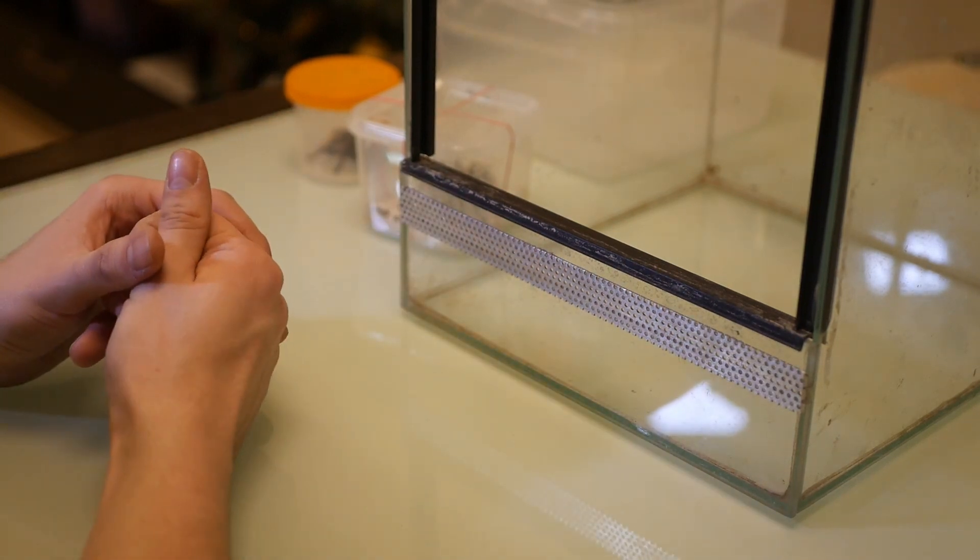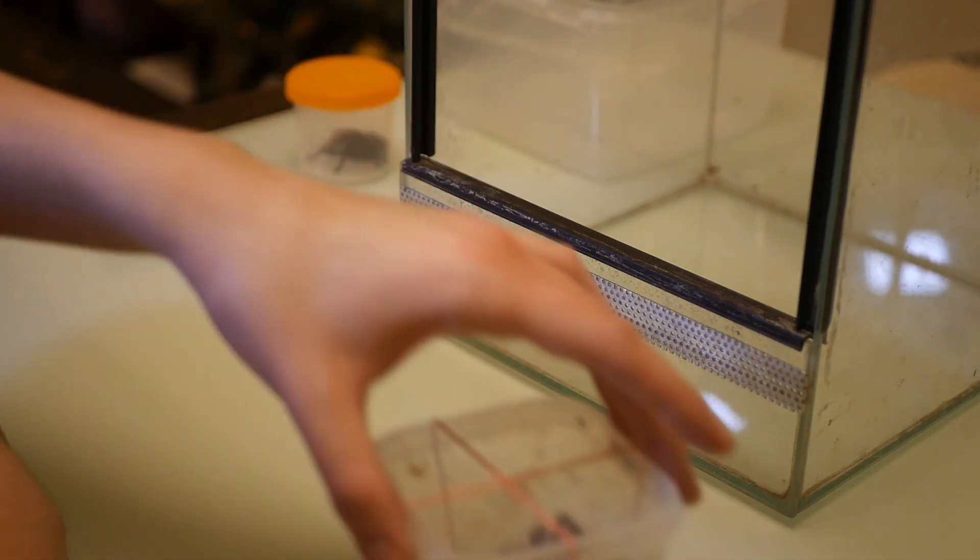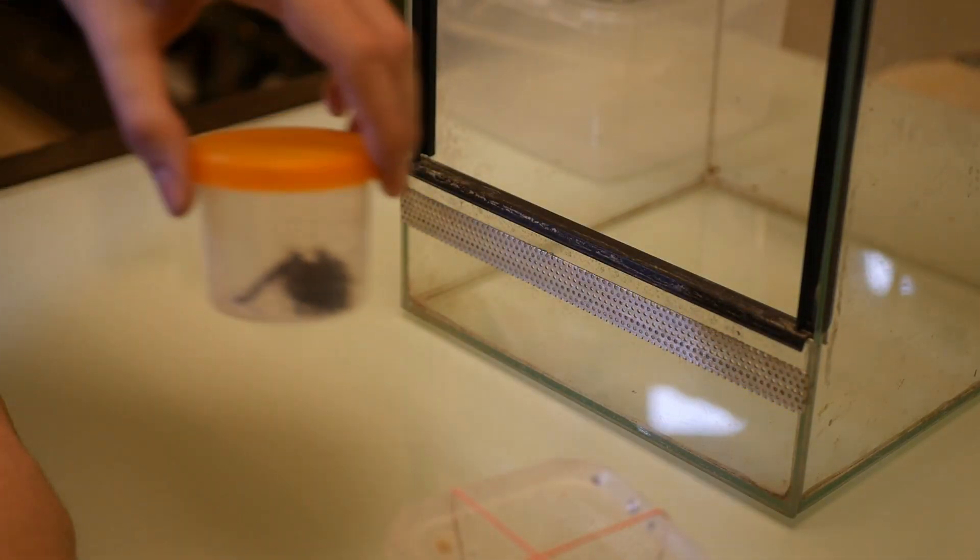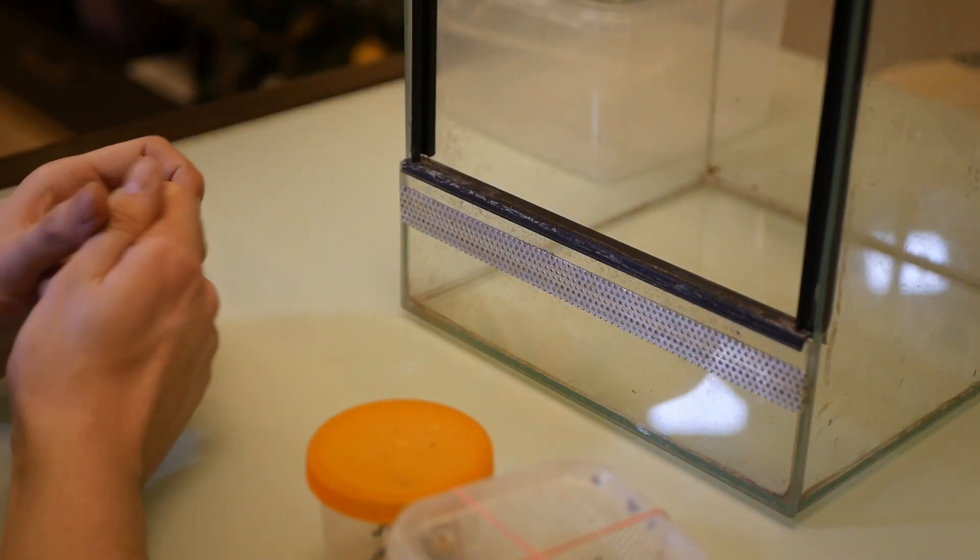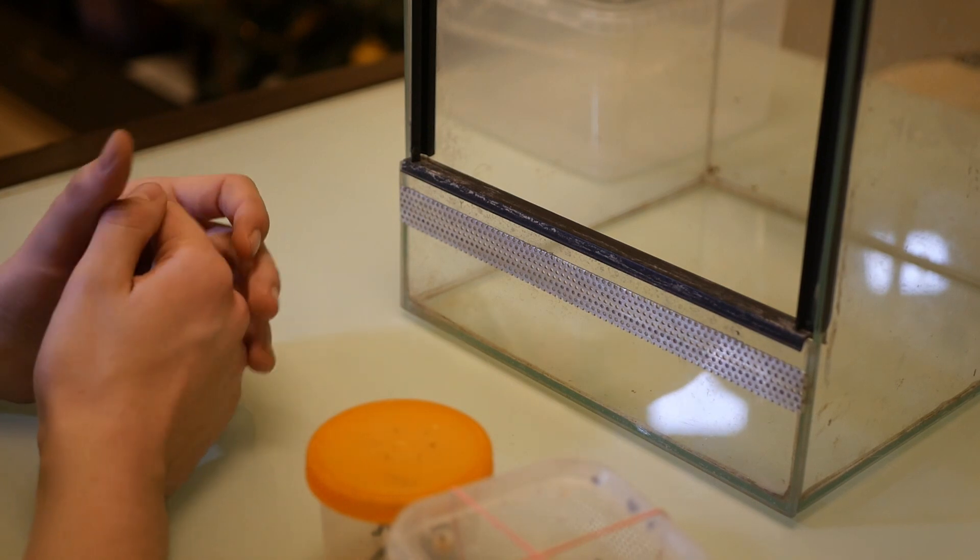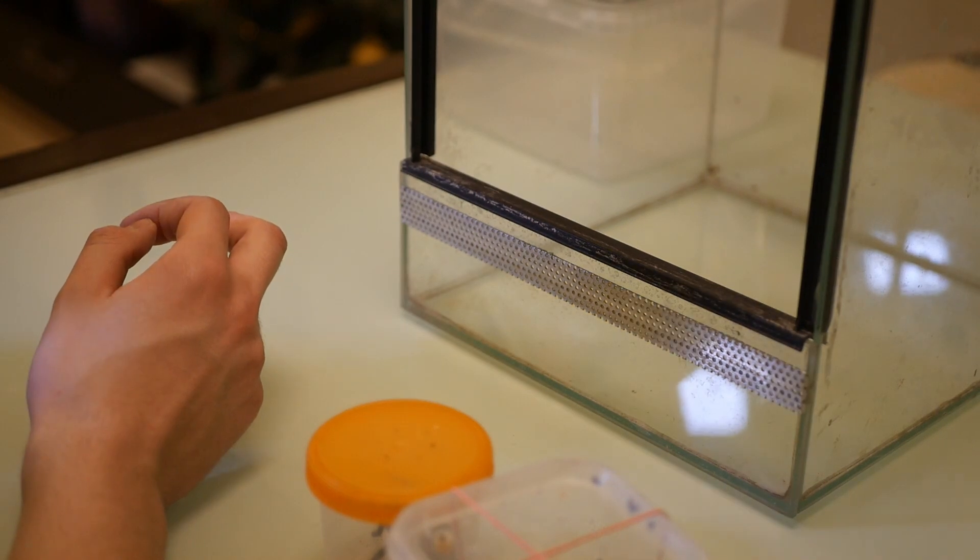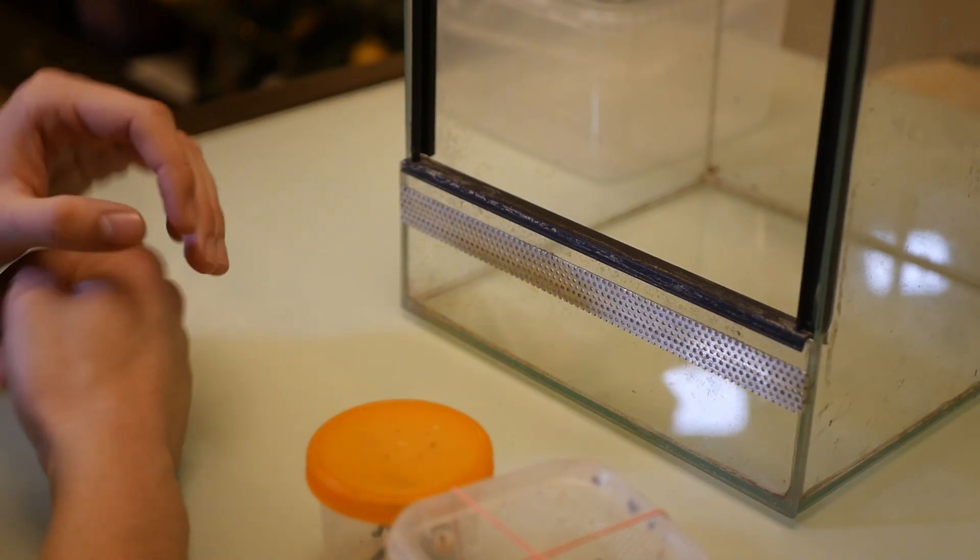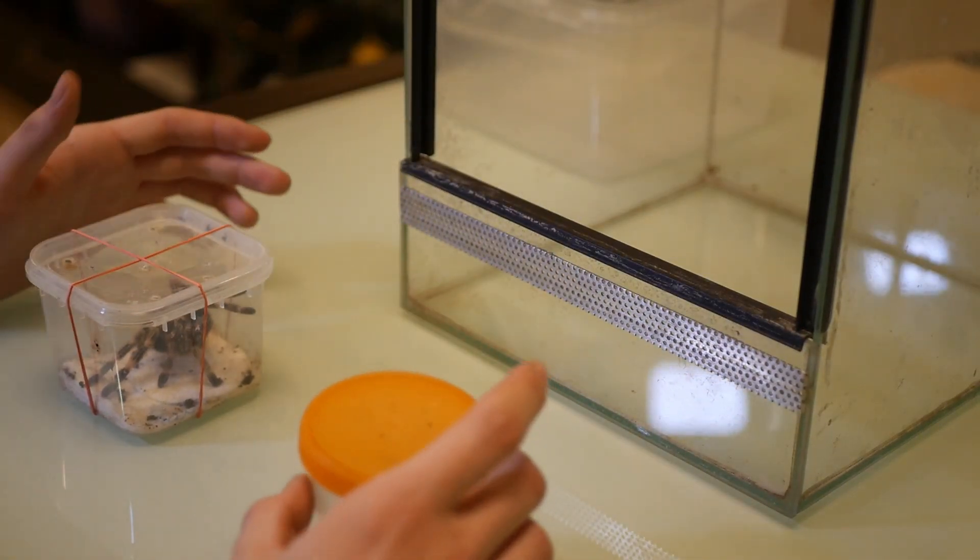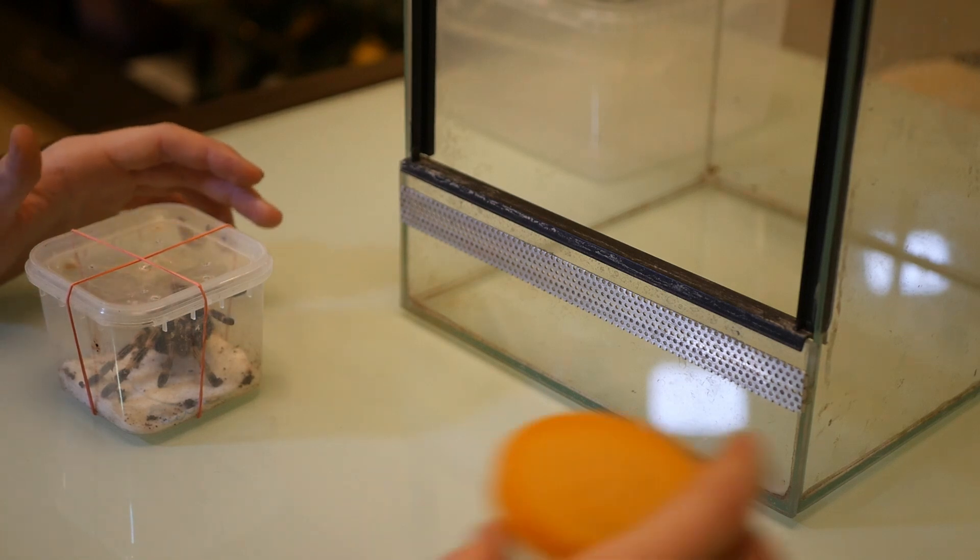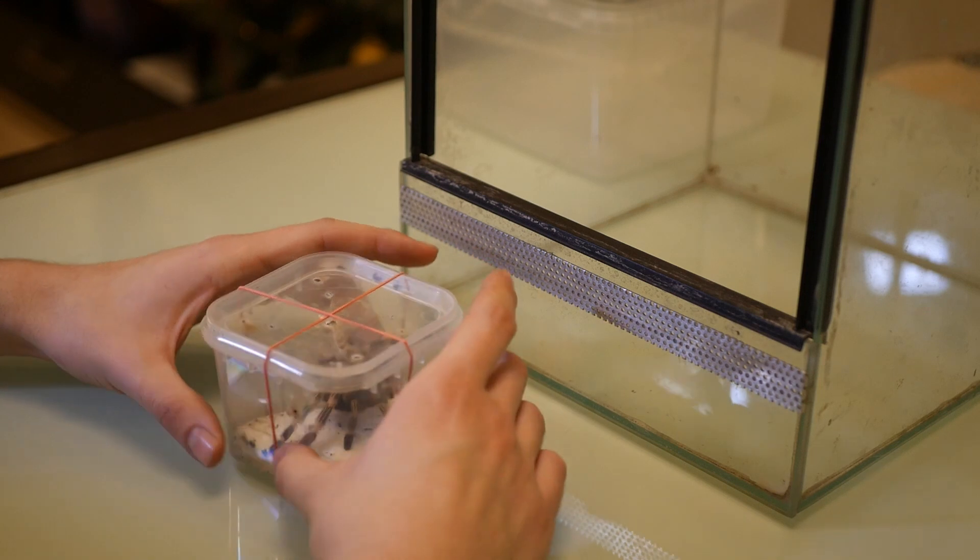Without further delay, because this is already taking a bit long, we have to transfer a Chromatopelma cyaneopubescens female and a Brachypelma albopilosum female. Out of habit I used the older name - it's of course no longer Brachypelma albopilosum but Tliltocatl albopilosum, but habit won out. We'll start with the kędzior and leave this one for later.